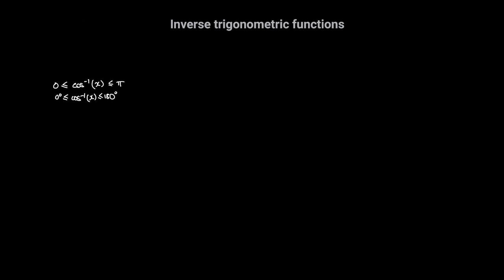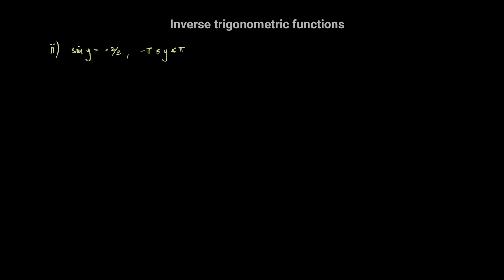Now let's solve the next question. We want to solve for all the values of y for which the sine of y is equal to negative 2 over 3, where y ranges from negative pi radians to pi radians. We want to find all possible values for the angle y for which sine of y equals negative 2 over 3. We can say that y is equal to the sine inverse of negative 2 over 3.